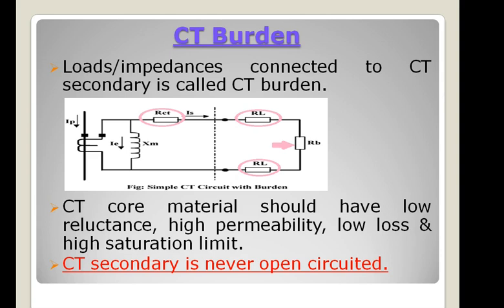Regarding CT core material: the reluctance of the CT core material should be low to reduce the probability of CT core saturation. Accordingly, the CT core should be of smaller length and increased cross-sectional area. Also, the core material should be of high permeability, low loss, and high saturation limit.